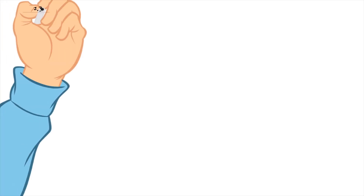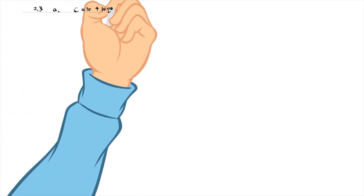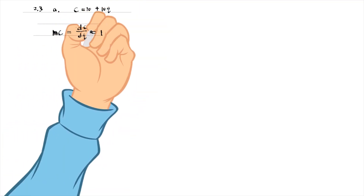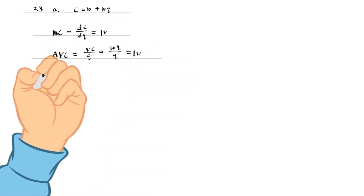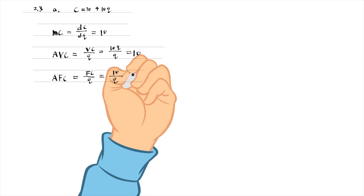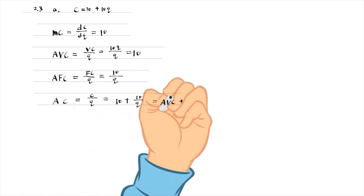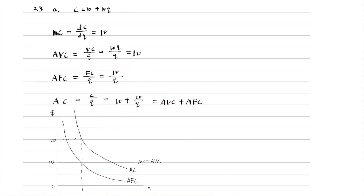From the total cost function, we can calculate the marginal cost, the average variable cost, the average fixed cost, and the average cost. The marginal cost and the average variable cost curves are horizontal lines at 10 in this case. The average cost curve is the average fixed cost curve shifted up by the average variable cost in this case.